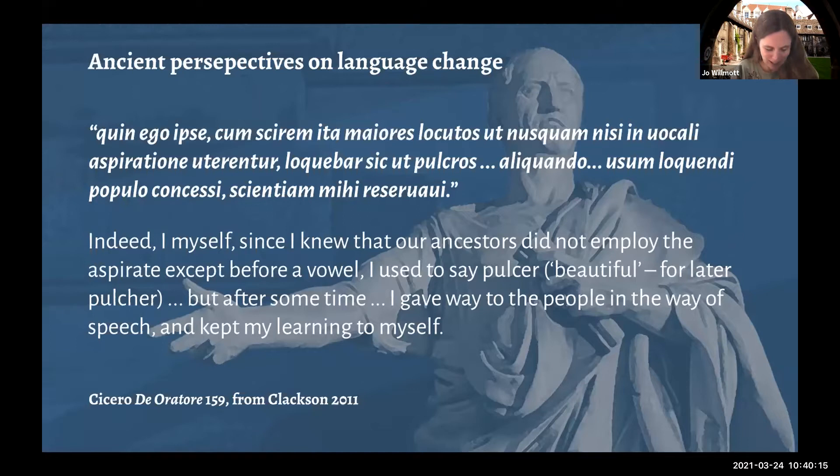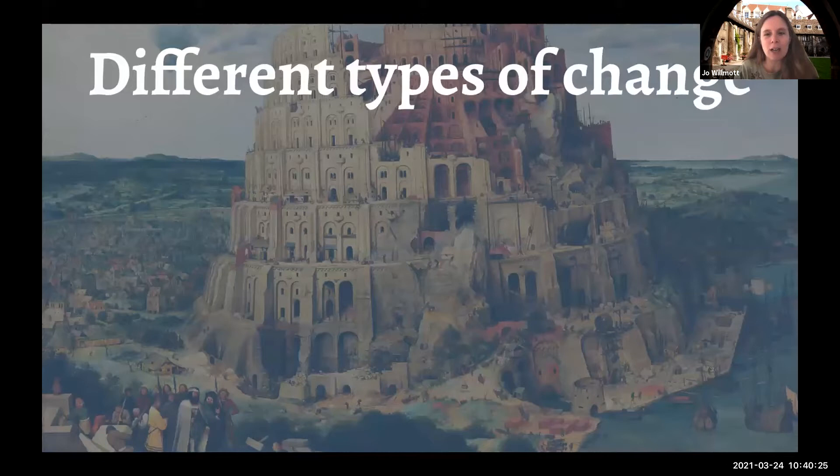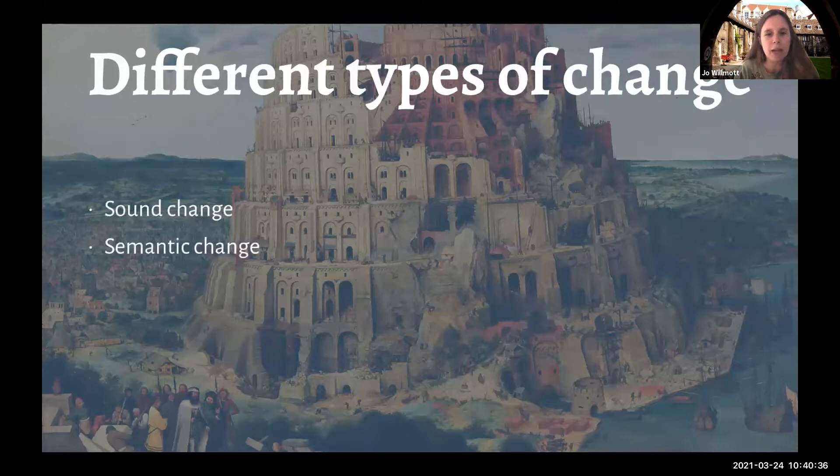There are various different types of change we can talk about, and I'll be giving examples of all of them. Sound changes may be the one we're most aware of. There's also semantic change, where the meaning of words changes over time, and syntactic change, where the structure of the language — the grammar — can change over time too.